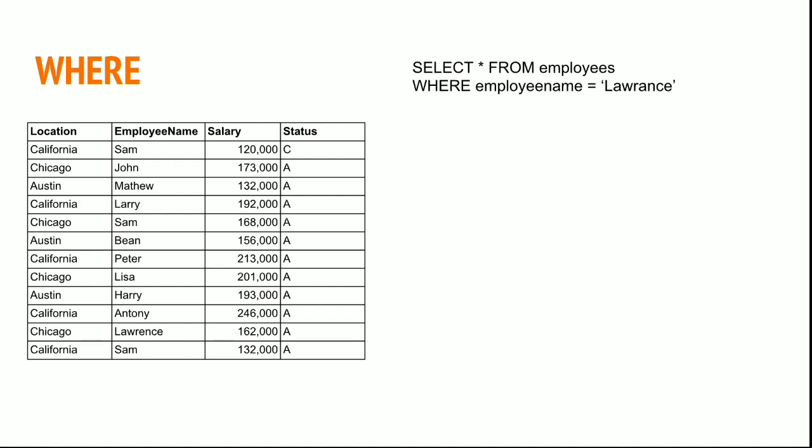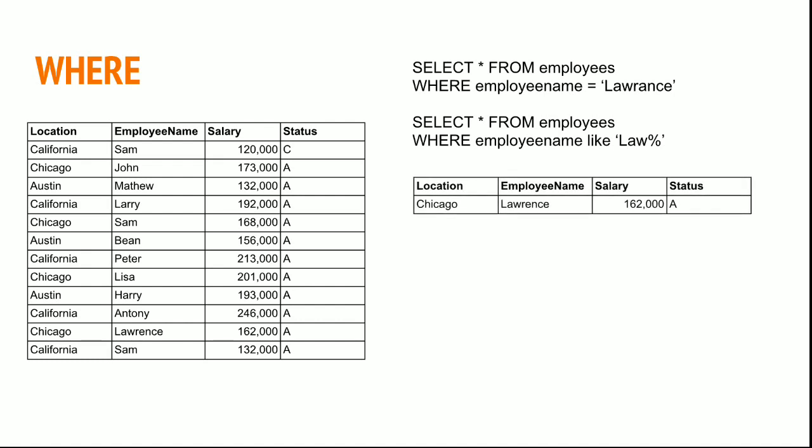Now if I try to fetch the employee named Lawrence, what would be the result? No records would be returned because I spelled it L-A-W-R-A-N-C-E, whereas the database has L-A-W-R-E-N-C-E. If I'm unsure of the actual spelling, I can use a wildcard: SELECT * FROM employees WHERE employee name LIKE 'LAW%'. Since I know the first three letters are L-A-W, I use the percentage symbol for the rest and get Lawrence's results.